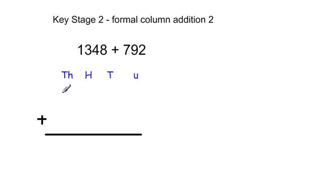Looking at formal column addition where we have to carry numbers, so we start off with 1348. We write that on the top, and then underneath we write the smaller number, which is 792, making sure we line up our columns correctly.